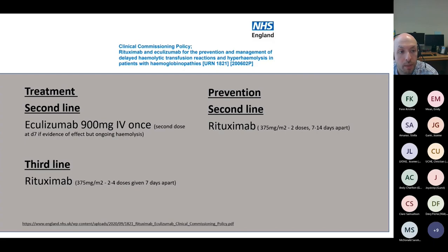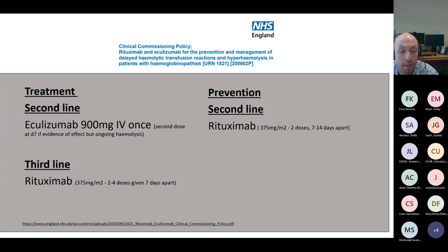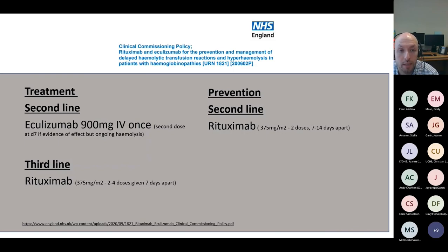For second-line treatment of an acute delayed hemolytic transfusion reaction or hyperhemolysis — where there is ongoing hemolysis despite IVIG and steroids — it is recommended to give eculizumab, which can be repeated at day seven. Rituximab is recommended as third-line treatment. For prevention in patients who have failed steroids and immunoglobulin and are anticipated to need further transfusion, rituximab is also recommended.